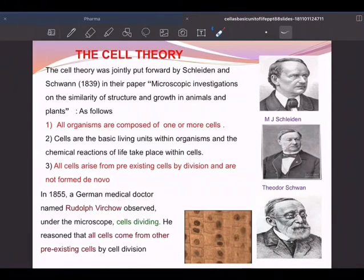They proposed what is known as cell theory. The cell theory is jointly forwarded by these two gentlemen, Schwann and Schleiden. That's why it's called Schleiden and Schwann theory. What are the points they have put forward? First, all organisms are composed of one or more cells.